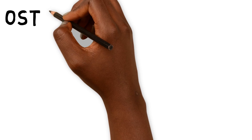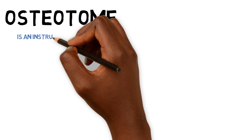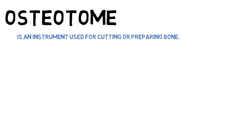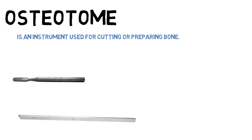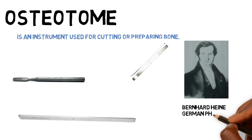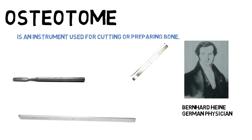Another commonly used instrument is an osteotome. This is an instrument used for cutting or preparing bone. Osteotomes are similar to a chisel, but beveled on both sides. It was invented by Dr. Bernhard Hein, a German physician in the early 1800s. They are used today in plastic surgery, orthopedic surgery, and dental implantation.